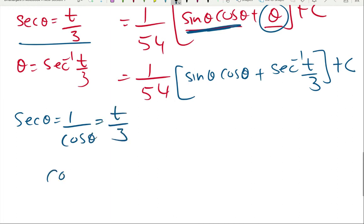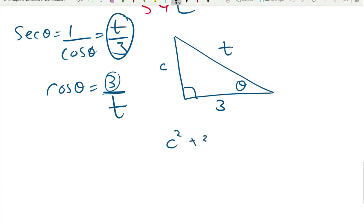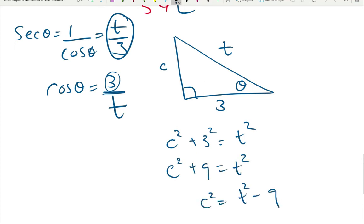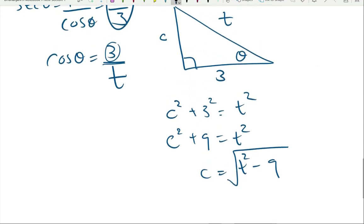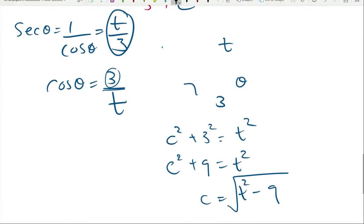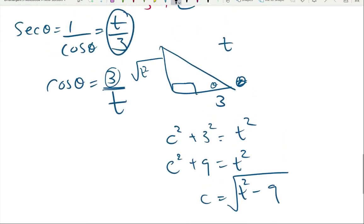Since sec(θ) = t/3, and sec = 1/cos, we get cos(θ) = 3/t. In the right triangle: adjacent = 3, hypotenuse = t, so the opposite side c satisfies c² + 9 = t², giving c = √(t² − 9). So the triangle has opposite side √(t² − 9), adjacent 3, hypotenuse t.